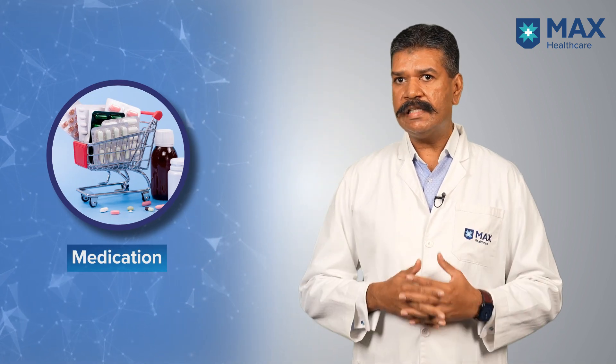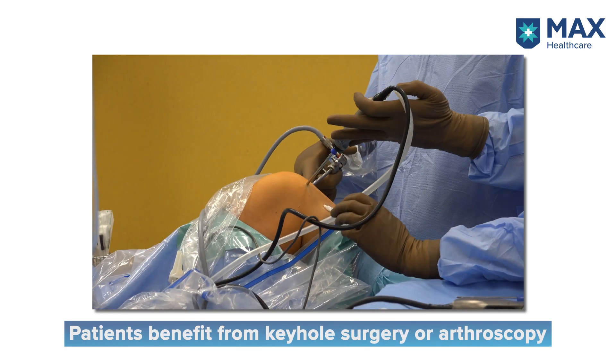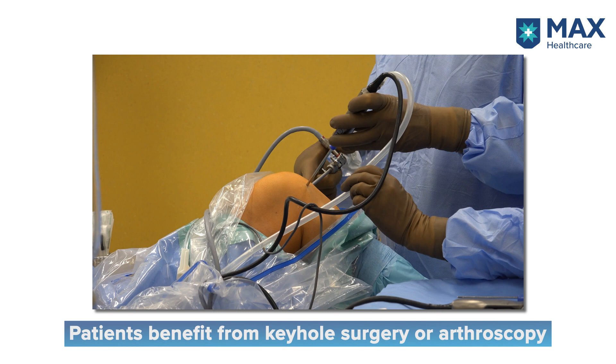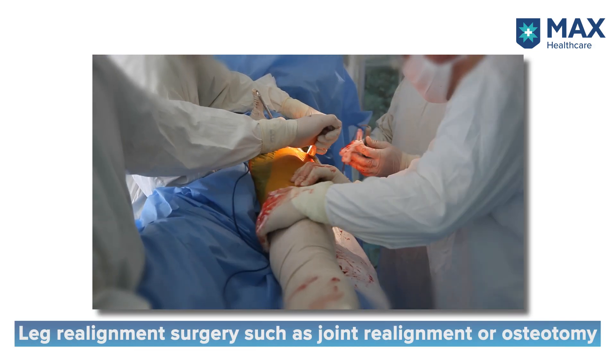Medical treatment of arthritis largely centers on relief from pain. For inflammatory arthritis, specific medications are available and are sometimes best prescribed under the supervision of a rheumatologist. In extreme instances, we look at surgical options. There are three broad kinds: a keyhole procedure or arthroscopy, sometimes performed to relieve mechanical symptoms due to torn menisci or torn ligaments; joint realignment surgery, also known as osteotomy, where deformed legs are realigned to equalize weight distribution across both halves of the joint, prolonging the life of the joint.